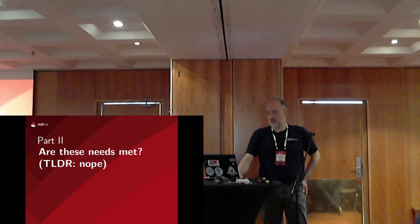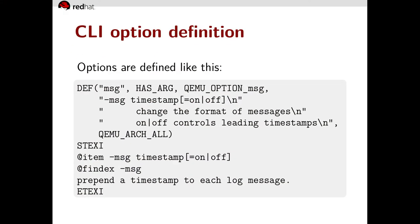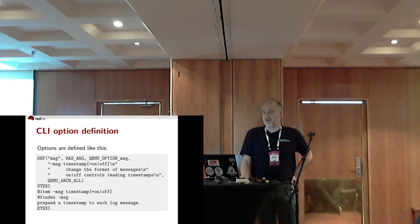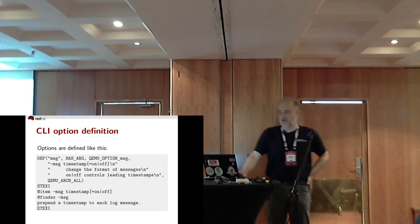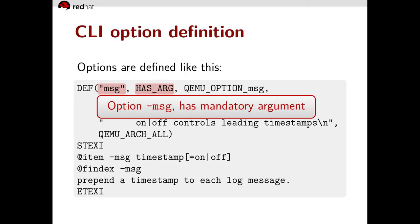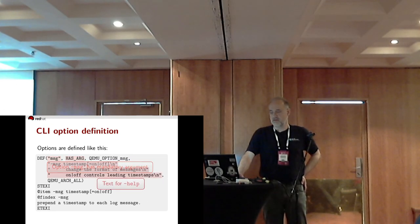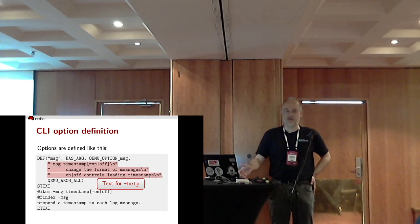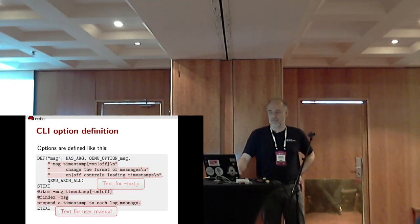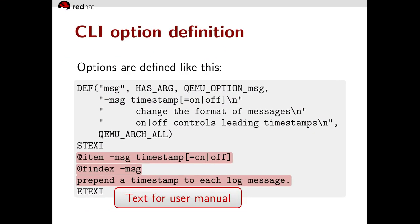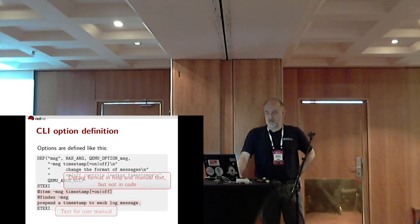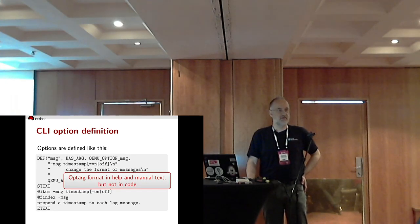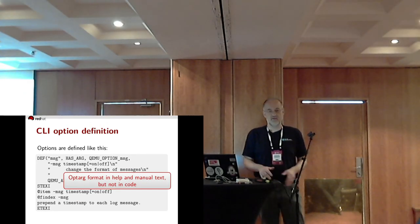Are these needs met? Well, not really. To understand that we need to explore how things are done. Here's a piece of code to define a command line option — simple enough. The option is called dash-msg, it has a mandatory argument. This is the text for dash-help; it documents that the argument can be either timestamp=on or timestamp=off. Note that the option argument format is documented in help and manual text, but it's not specified in code. That code lives elsewhere.